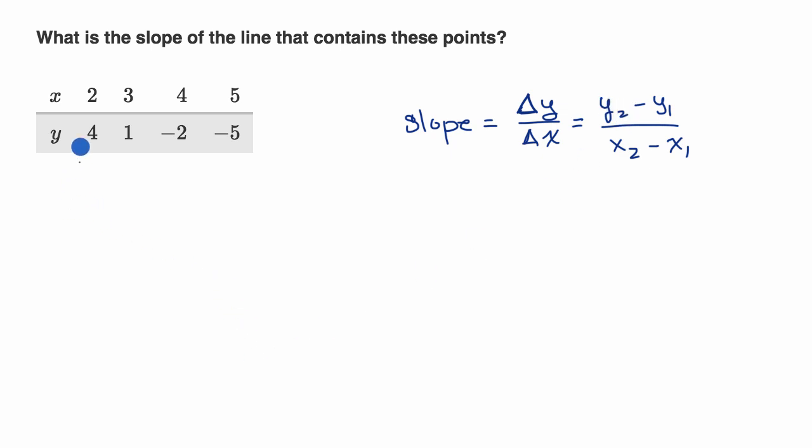So let's just pick two x, y pairs here, and we can actually pick any two if we can assume that this is describing a line. So we might as well just pick the first two. So let's say that's our starting point and that's our finishing point. So what is our change in x here? We're going from two to three. So our change in x is equal to three minus two, which is equal to one, and you can see that, to go from two to three, you're just adding one.